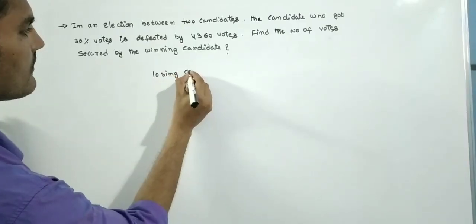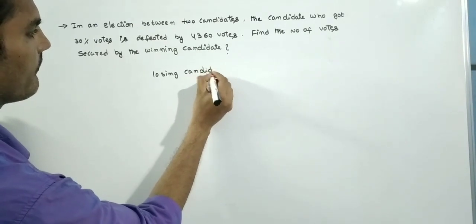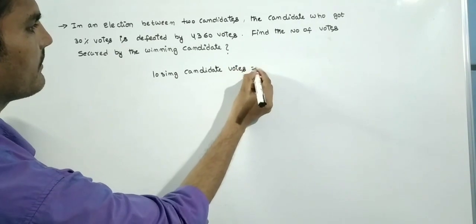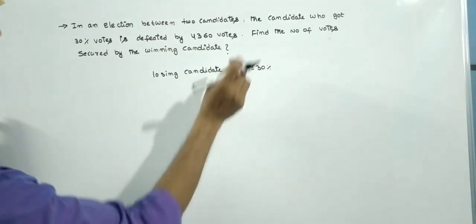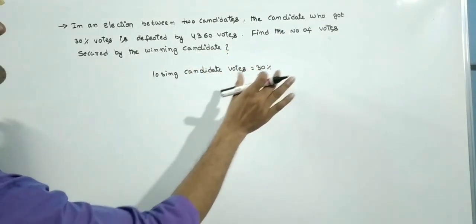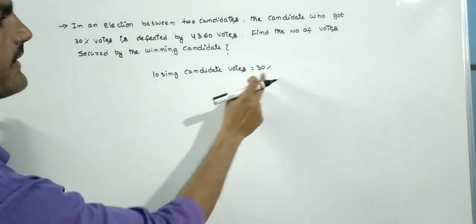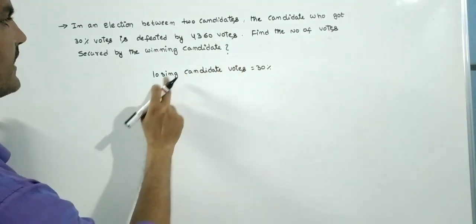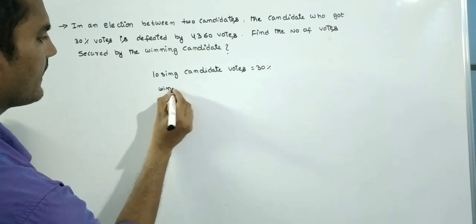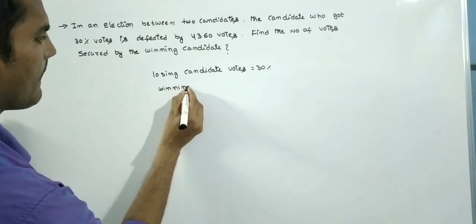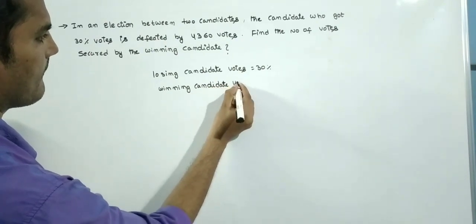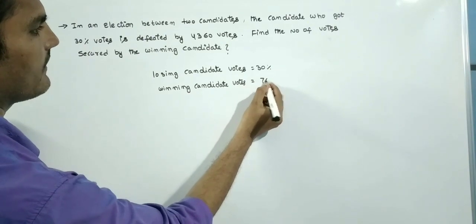Next problem: the losing candidate's votes are 30%. There is no mention of invalid votes anywhere, so all 100% votes are valid. If the losing candidate got 30% votes, then the winning candidate got 70% of the votes.